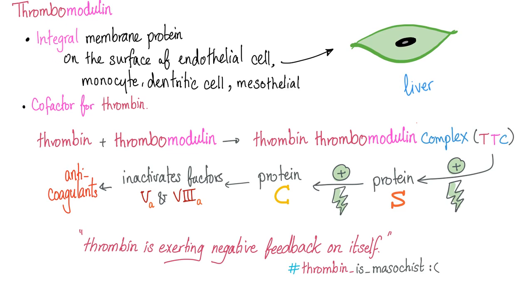Back to thrombomodulin. It's an integral membrane protein from the endothelium and a cofactor for thrombin — it needs to bind to thrombin. Thrombomodulin is a protein that will modulate thrombin from being pro-coagulation into becoming anti-coagulation. Thrombin has been brainwashed.